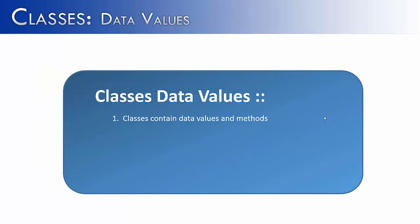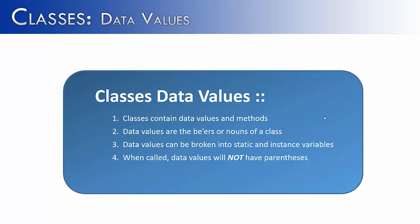As shown in the beginning of the video, classes contain two things: data values and methods. Data values are the beers or nouns of a class. They don't perform an action but they represent some kind of value. Data values can then be broken up into two parts: static and instance. Static are true for the entire class, whereas instance are true for one particular object or in the example that I gave you one particular student. So one student has a name versus another student has a different name. But all students have to submit to what is the standard in order to make an A in this particular class.